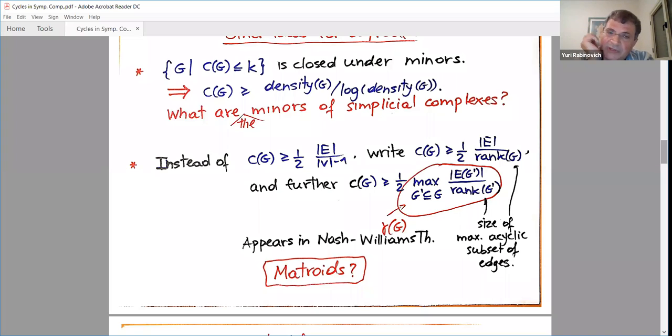Another attempt is to reinterpret the Erdős-Gallai theorem and say that E divided by V minus one is actually E divided by rank of the graph. The number of vertices, where the rank of the graph naturally is the size of maximum acyclic subset of edges. Assuming G is connected, which we may assume. So this already can generalize. And it turns out to be a matroidal generalization. If we look at E of G divided by rank G, this is a rather matroidal notion. It appears in the Nash-Williams theorem, which is sort of a matroidal theorem in graphs, and it has a higher dimensional analog.